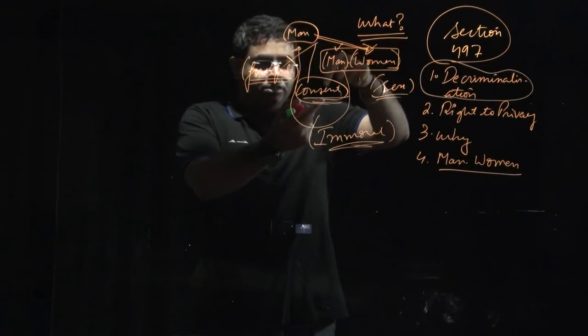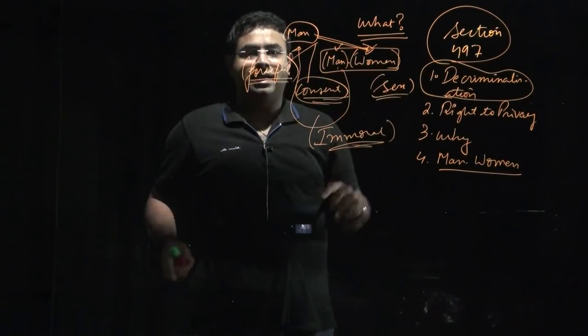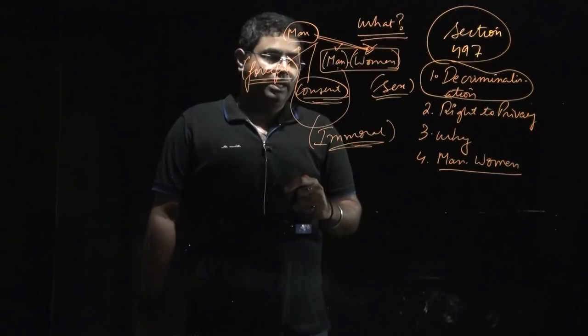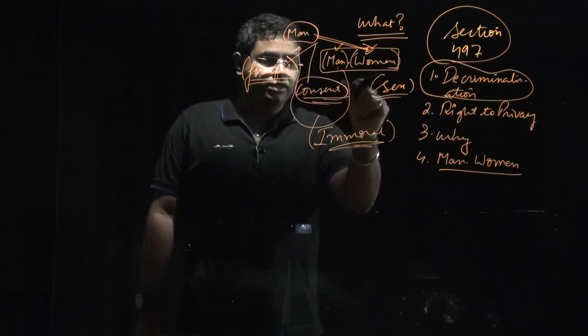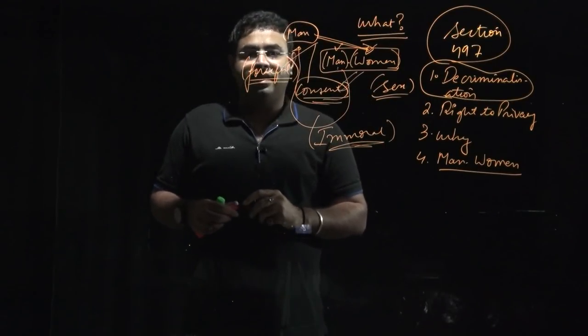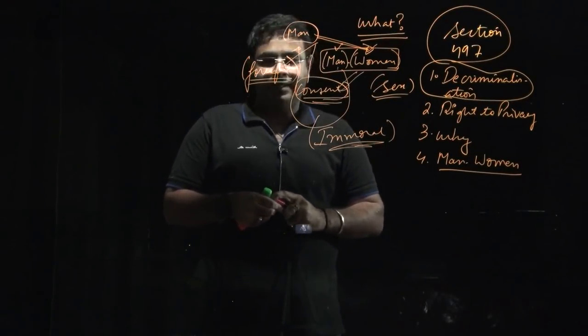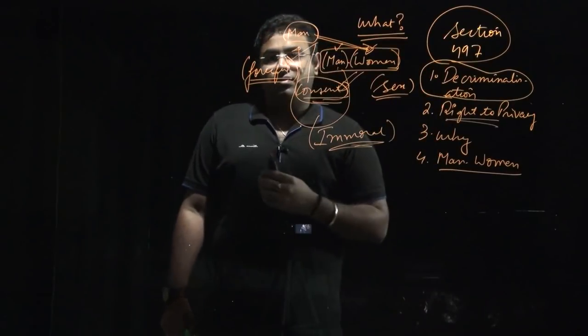It means if the sex is being conducted consensually between a married woman and an outsider man, this should be decriminalized because it is against the consent that this woman is giving, and the government has no right to interfere in the personal domain, in the privacy. So the right to privacy is hurt by Section 497.